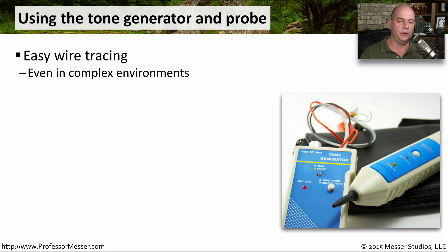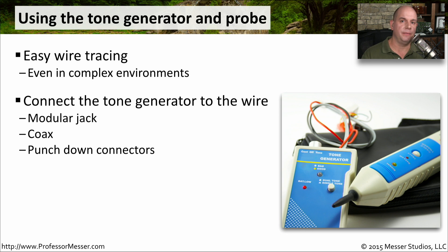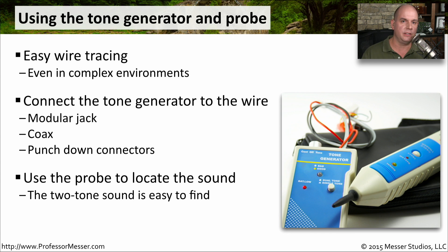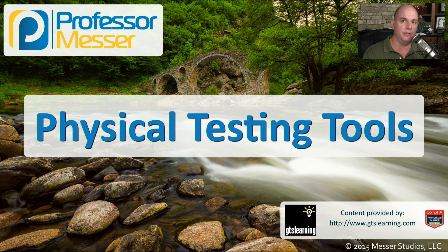These are very easy to use. I have a toner probe that I use in my studio, especially when connecting different devices through the ceiling, around a corner, or through a wall — I'm able to trace any wire I happen to have. You never know exactly what type of connection you'll be plugging into, so many tone generators have different types of connectors: a modular jack, a coax connection, or alligator clips that allow you to connect to a punch-down connector. You then take your inductive probe, go to the other end of where you think that wire is, and move it around until you hear the tone coming through that particular set of wires.